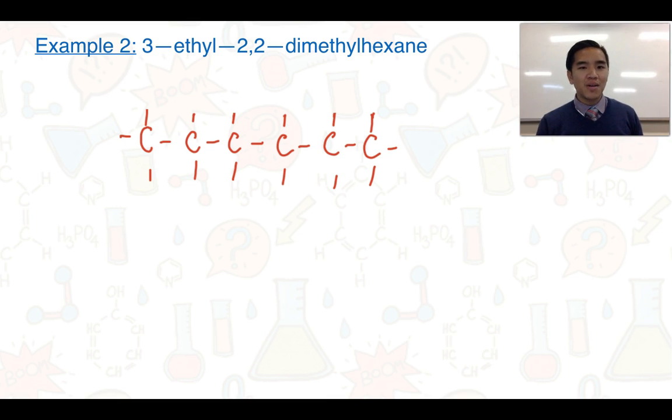The second step now is to number the carbons. And this is something that you might want to do directly. But once you get confident enough, you don't need to show this. Next, we need to add in any appropriate alkyl groups.